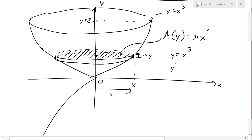So y to the power of 2 over 3 equals x to the power of 3, the power of 2 over 3, and these cancel, so we're left with x squared. So this equals pi times y to the power of 2 over 3.